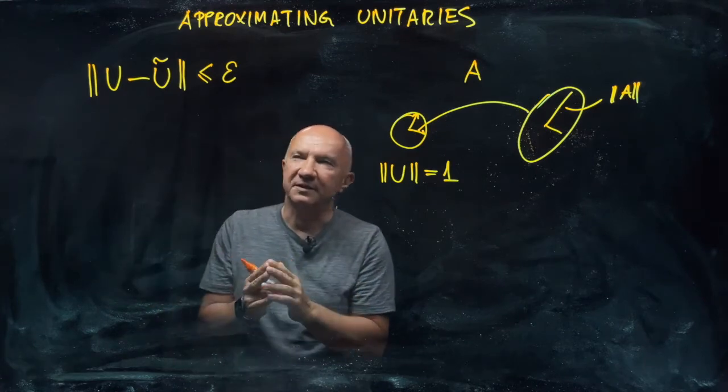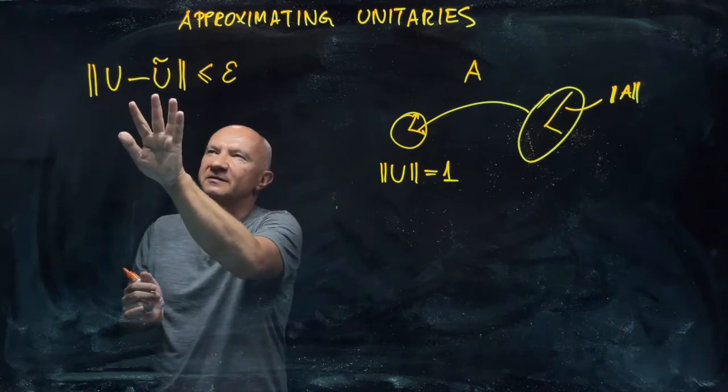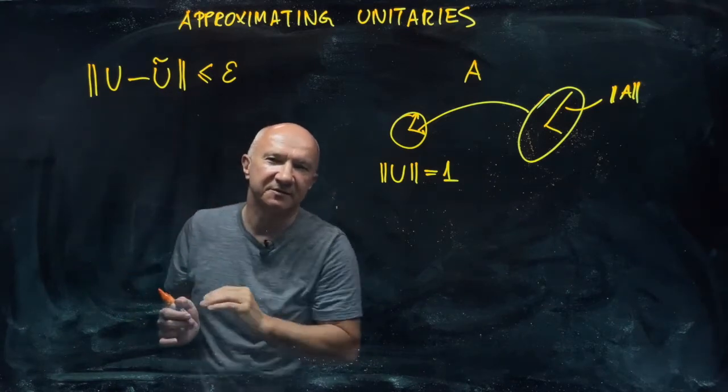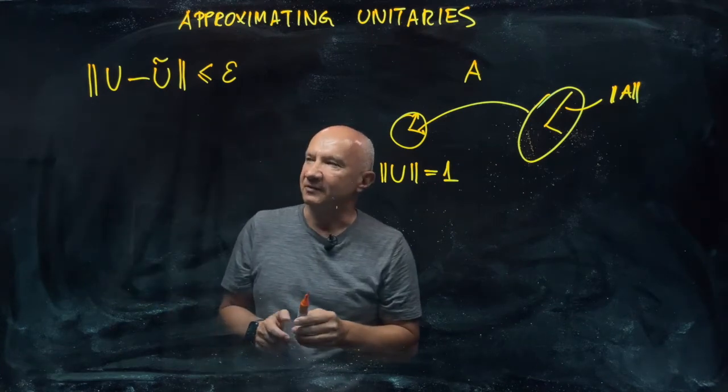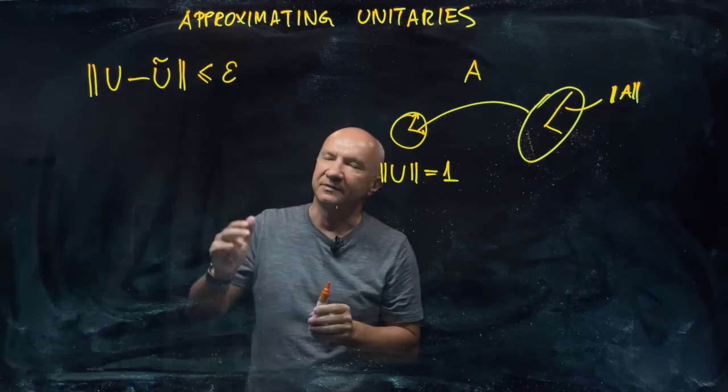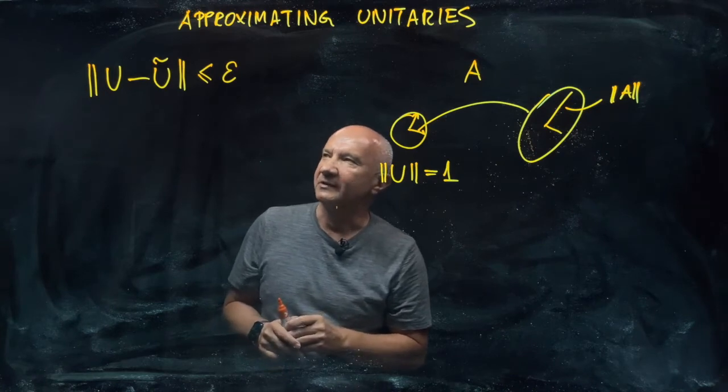And the other property is that it's symmetric. So the distance between u and u tilde is the same as the distance between u tilde and u. And the triangle inequality is something that you can just work out yourself.